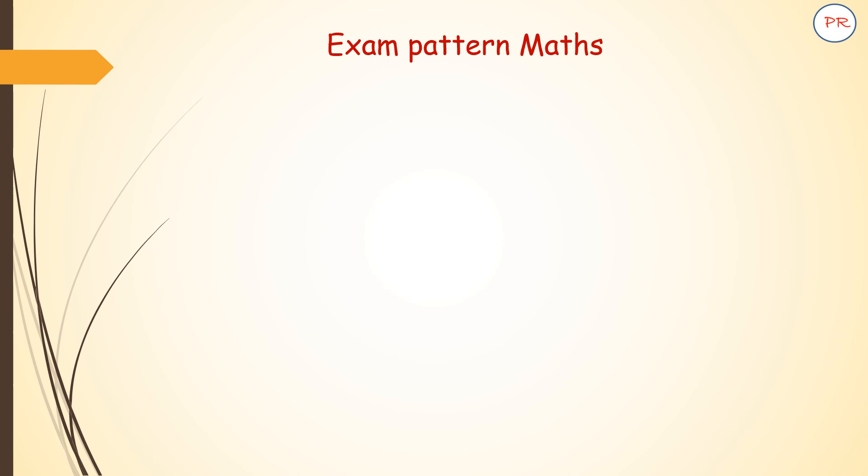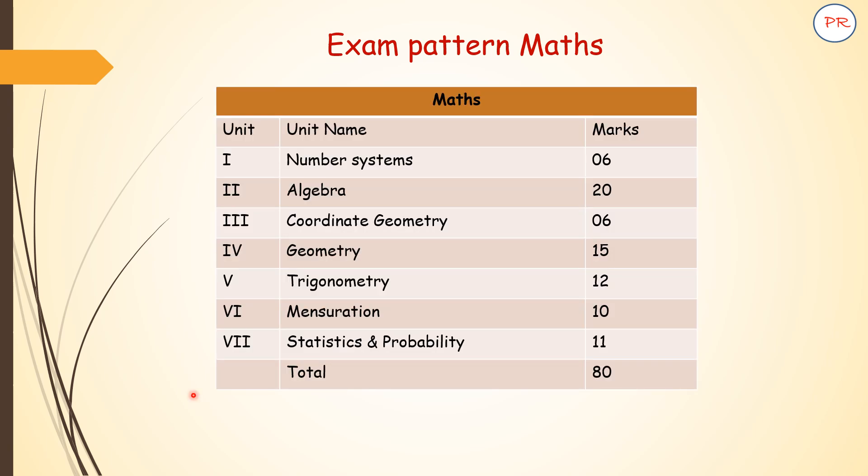Here is the exam pattern for maths. You can see it is divided into seven units, and mark distribution is also given. Number systems includes two chapters, there are six marks. Algebra has three chapters which will be asked for 20 marks. Coordinate geometry will be asked for six marks. Then geometry part will be asked for 15 marks, and trigonometry will be asked for 12 marks. Mensuration will be there for 10 marks. Statistics and probability will be for 11 marks. So total 80 marks paper will be there. By considering all these things, you have to prepare all the chapters in a nice manner because questions from each and every chapter will be asked.